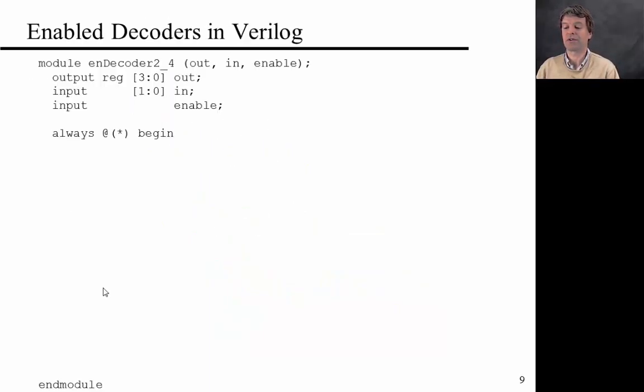So what does a decoder or an enabled decoder look like in Verilog? Let's stick with this example of a 2-to-4 decoder. So here's the code. We have an output. In this particular case, it's a register with 4 bits because there's 4 output wires. The input, it's a 2-bit number. And there's also an input that's called enable. One way to realize this is by saying it's a combinational logic element. So it's always at star begin. And now we're going to say, we're going to use an if statement. We're going to say, if enable. So only if enable is true. Now we're going to go through the different possibilities, the different cases for the inputs case by case. I'm going to use this statement case of in.